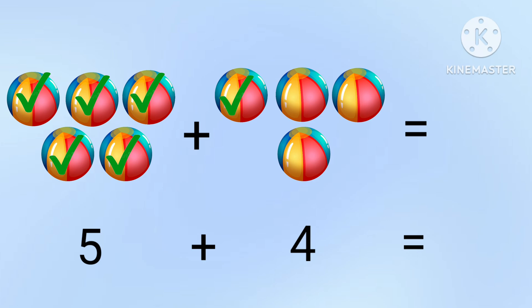6, 7, 8, 9. There are 9 balls. So 5 plus 4 equal to 9.